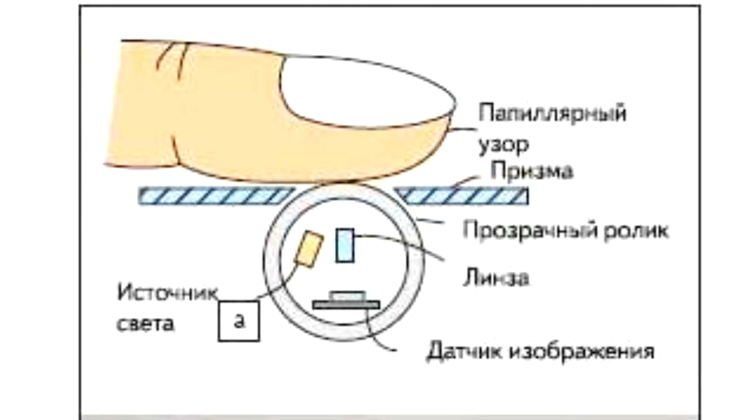The simplest optical technology is used here. Inside the transparent cylinder, a static light source, a lens, and an image sensor are placed. After the full scrolling of the finger, the program composes the resulted image of the print.